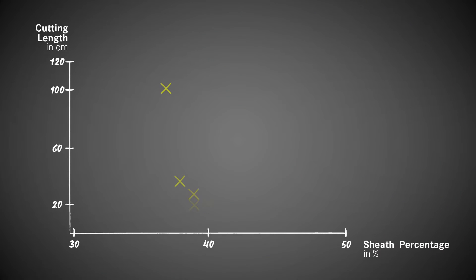Next, we're going to look at the sheath percentage of a rope. The argumentation here could be that the sheath is supposed to protect the rope, so the more sheath I have, the better it should be. Again, same principle — we look at the cut values and hold them against the sheath percentages of each rope model. And we have to once again see that we can't really find a correlation between sheath percentage and cut values. Higher values for lower sheath percentages, lower values for higher sheath percentages, and different values for the same sheath percentages. Not a good parameter either.